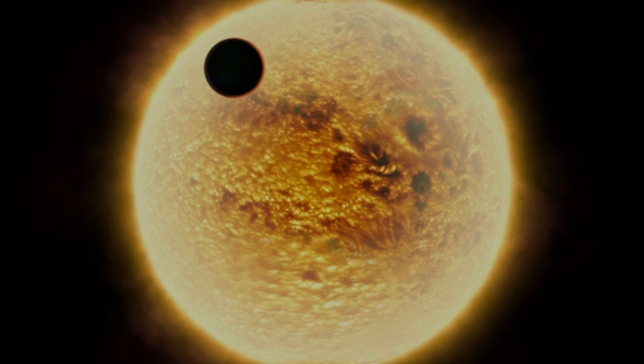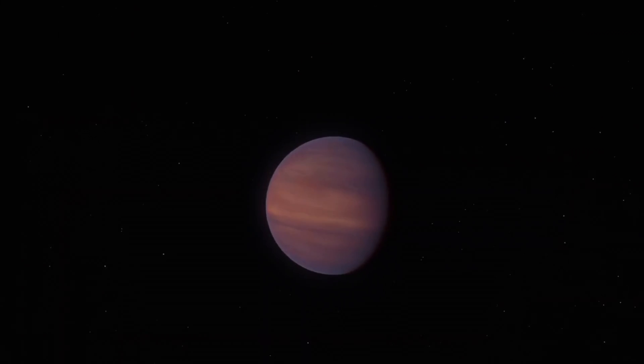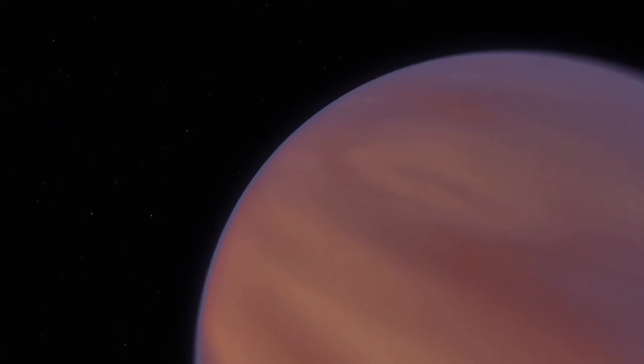That side constantly faces its star, so that side is very hot as compared to the other side. But overall the planet is a pretty hot planet. Another way to know how close the planet is to its host star is to see how fast it rotates. This planet rotates around its host star in about four to four and a half days.